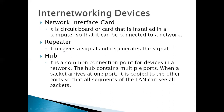The repeater receives a signal and regenerates it. The hub is a common connection point for devices in a network. The hub contains multiple ports — when a packet arrives at one port, it is copied to the other ports so that all segments of the LAN can see all the packets.